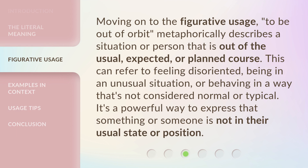Moving on to the figurative usage, to be out of orbit metaphorically describes a situation or person that is out of the usual, expected, or planned course. This can refer to feeling disoriented, being in an unusual situation, or behaving in a way that's not considered normal or typical. It's a powerful way to express that something or someone is not in their usual state or position.